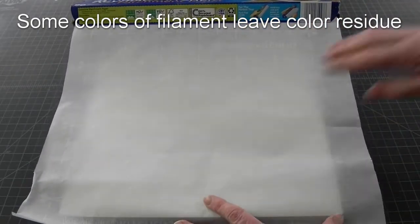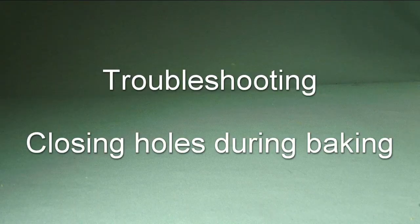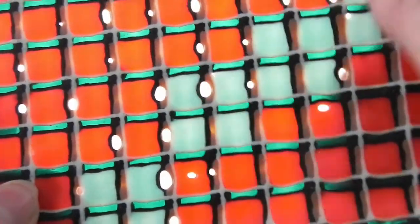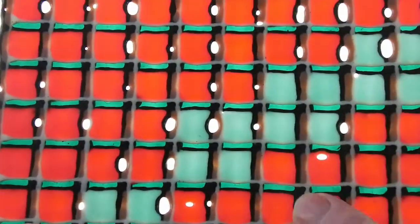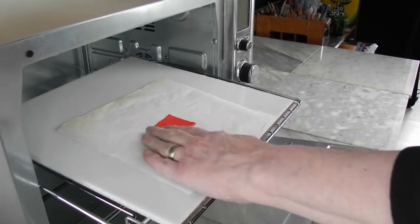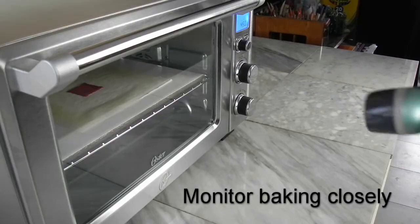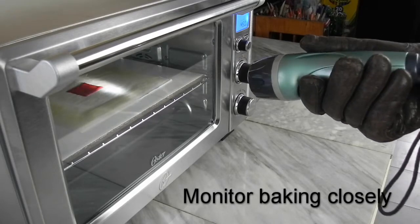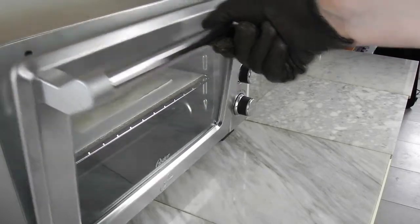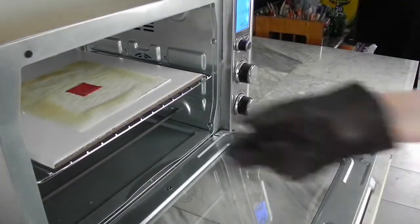Now what do you do if you missed some of those pesky gaps and you get a hole in your surface during baking? I left one potential gap in this sample so I can show you. The moment you see a hole opening up, slide it out.